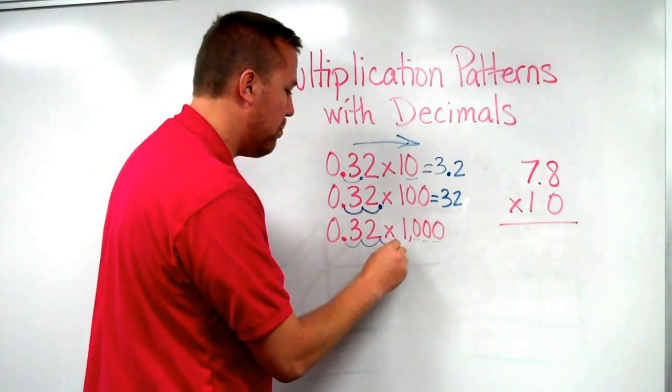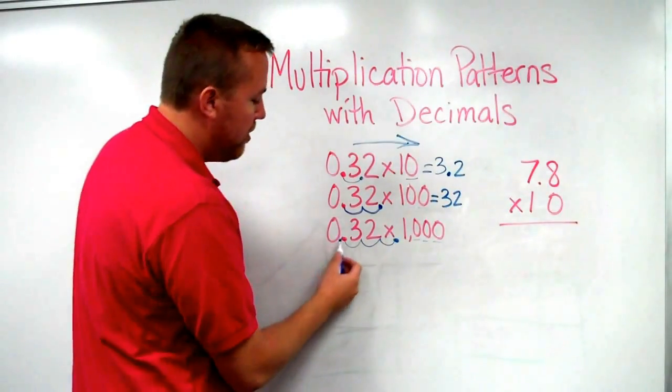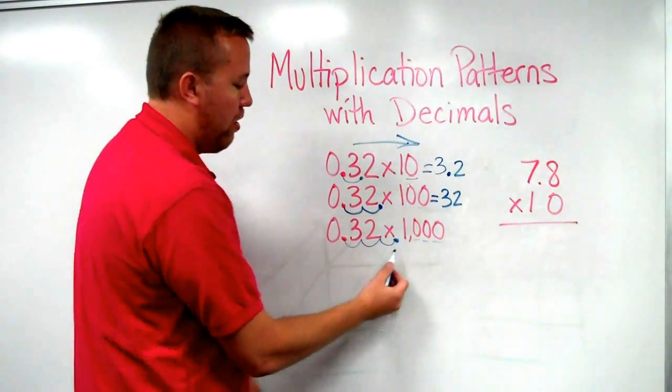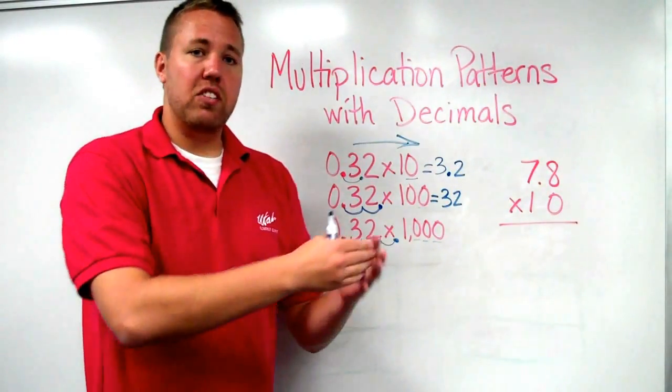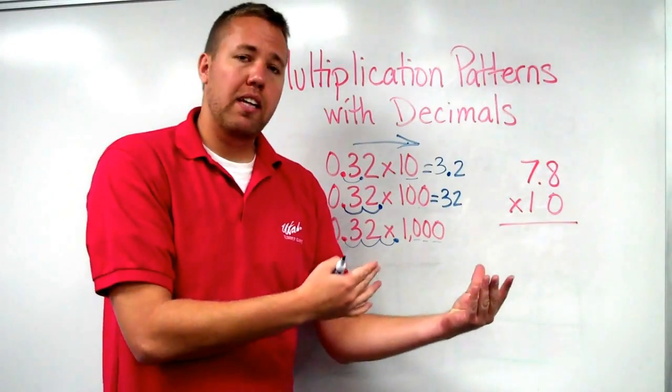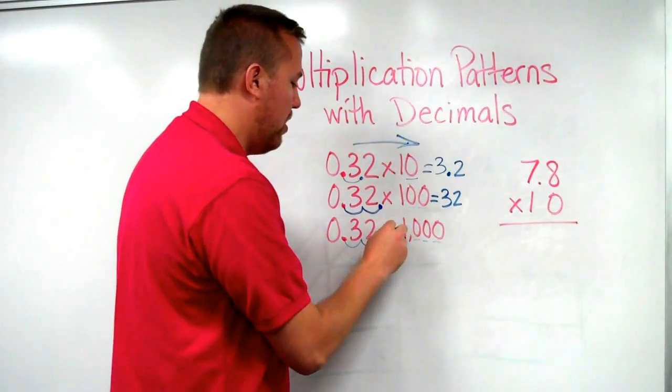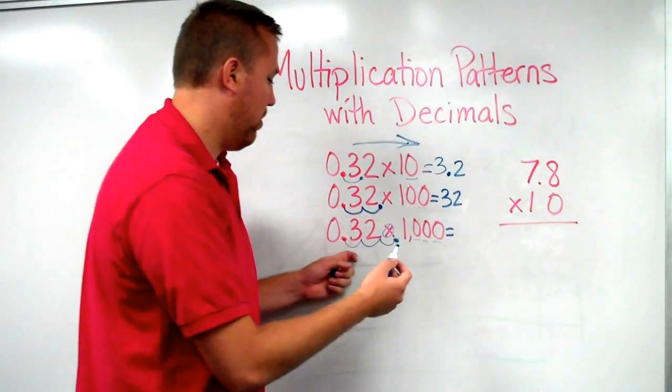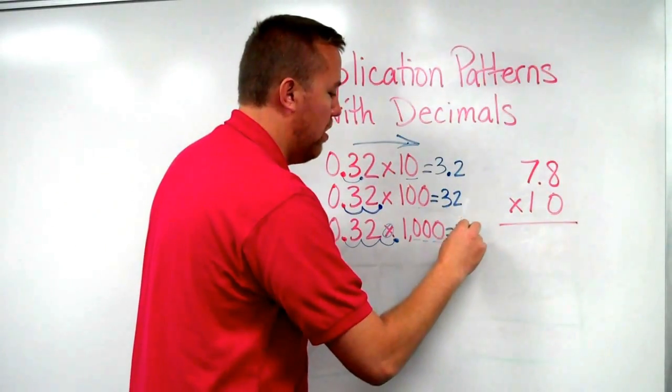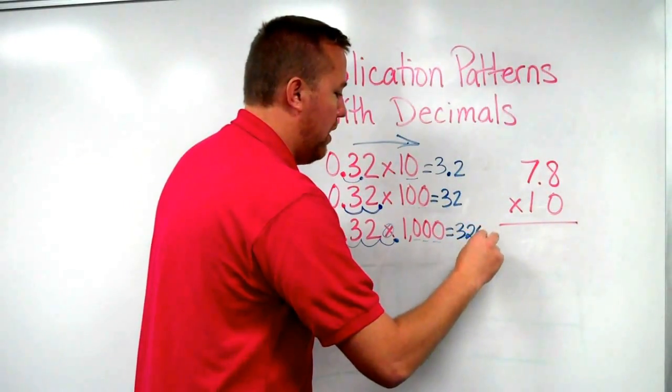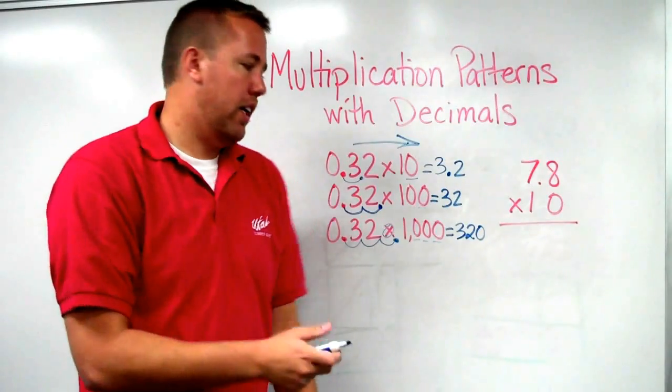I still move it three times, and I put the decimal there. See, I moved it once, twice, three times. Now, because there's nothing there, nothing is basically the same as 0. So 0.32, or 32 hundredths, times 1,000 equals 320.